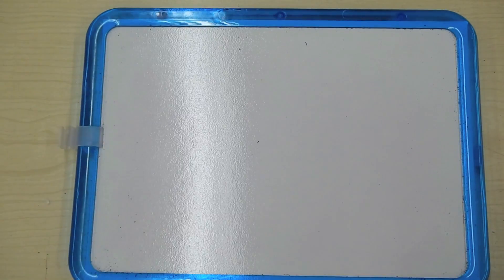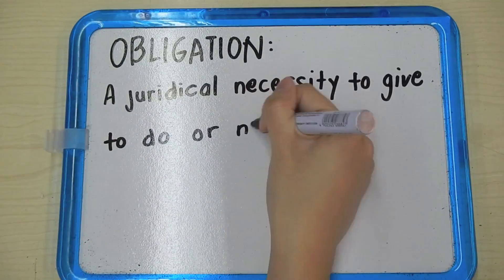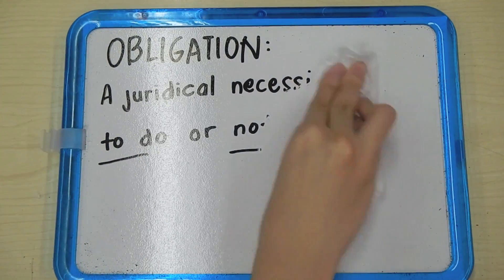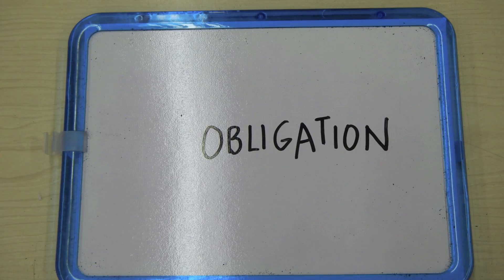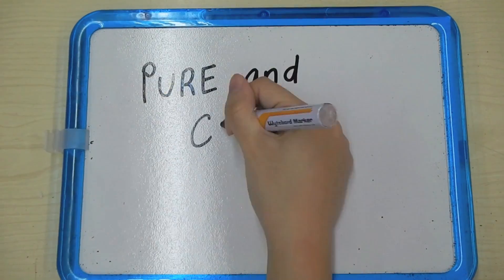But before all this, let's define the word obligation. An obligation is a juridical necessity to give, to do, or not to do. There are many kinds of obligations, but for today, our main topic would be pure and conditional obligations.